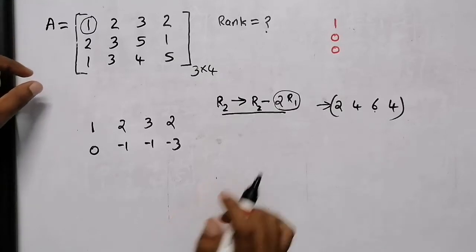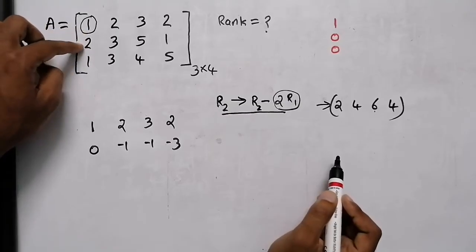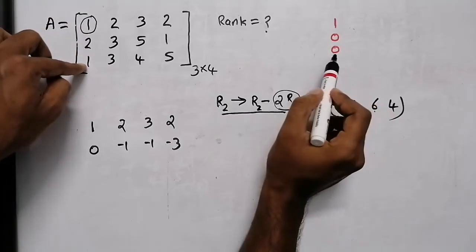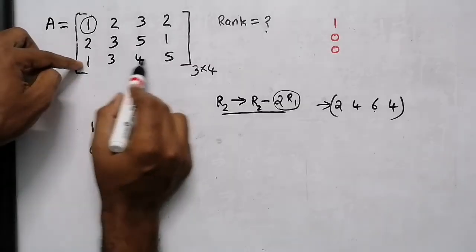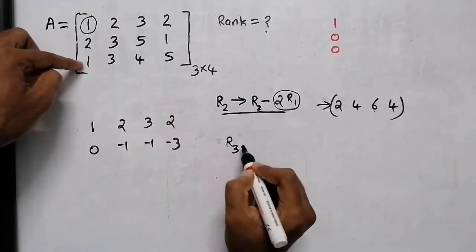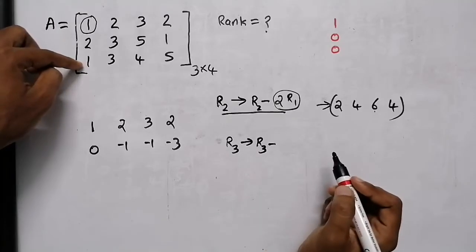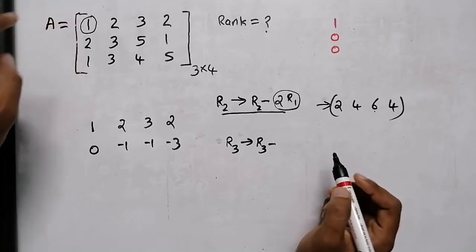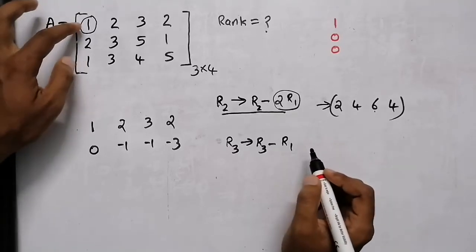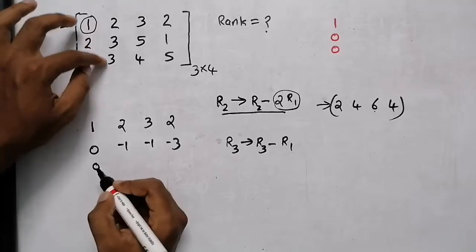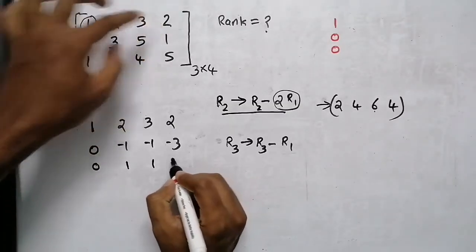The first element R2 is 0. The second element is 0. The other element is 0. The third row is 3. The other operation is 3, the third row is 0. R3 minus R1: 1 minus 1 is 0, 3 minus 2 is 1, 4 minus 3 is 1, 5 minus 2 is 3.